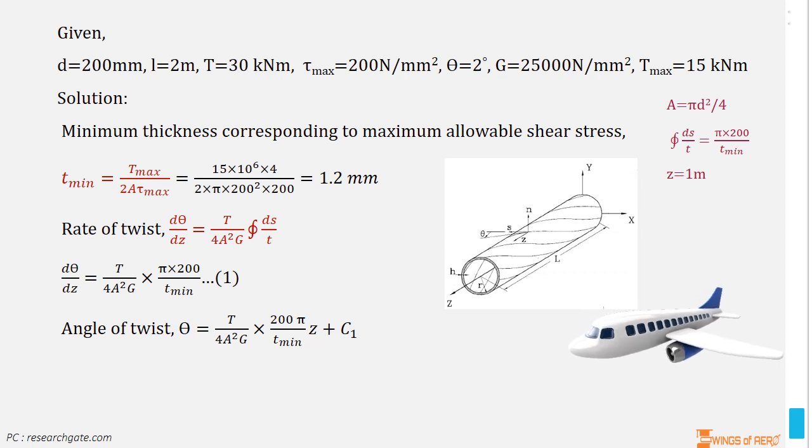Taking the origin for Z at one of the fixed ends and integrating equation number 1 for the half length of the beam, we obtain angle of twist θ is equal to T divided by 4 into A² into G into 200π divided by T_min into Z plus C₁. Where C₁ is a constant of integration.